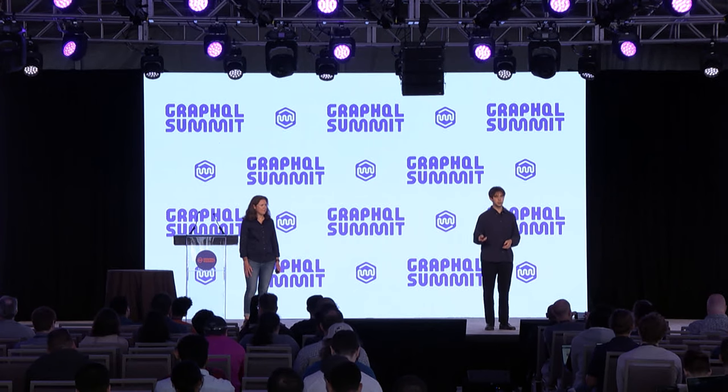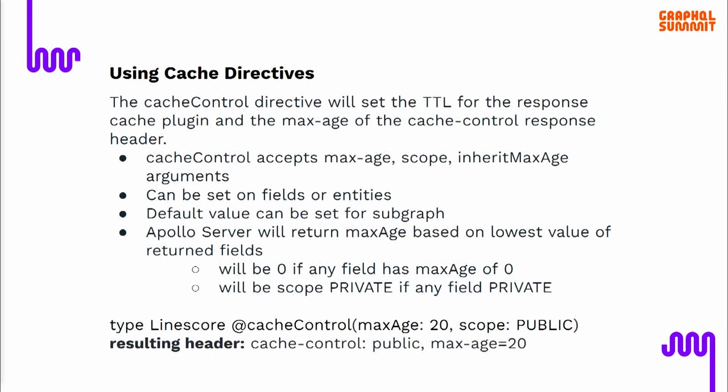For example, the line score type for a live game is annotated with a max age of 20 seconds scoped to public. The resulting header from our baseball data subgraph would be 'Cache-Control: public, max-age=20'. That's what your CDN or client would receive.